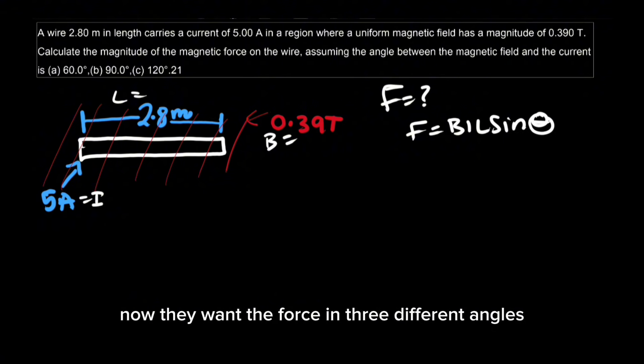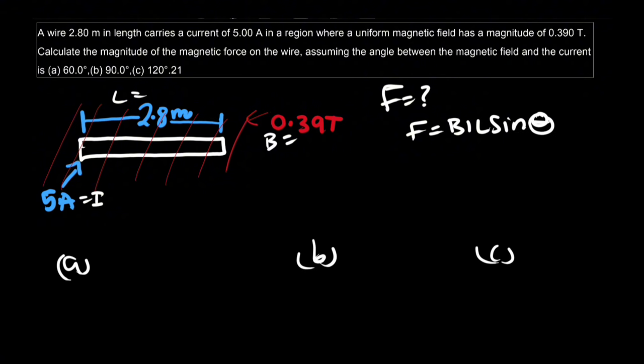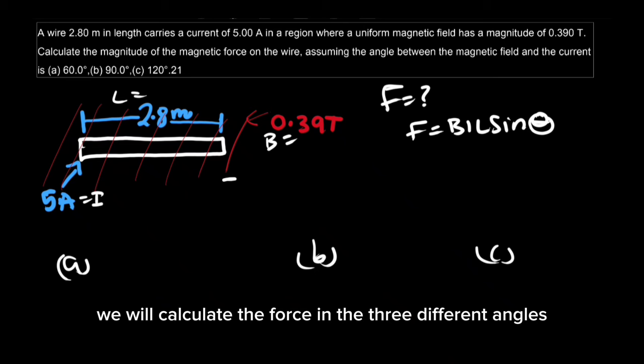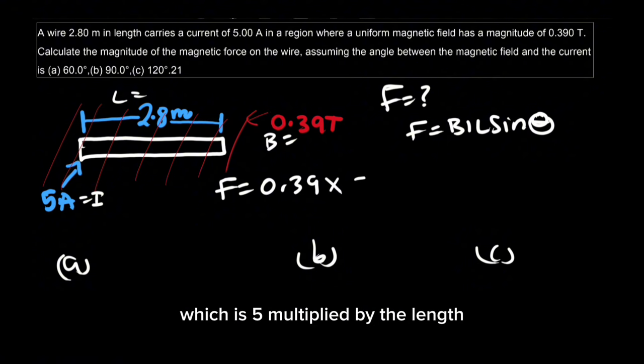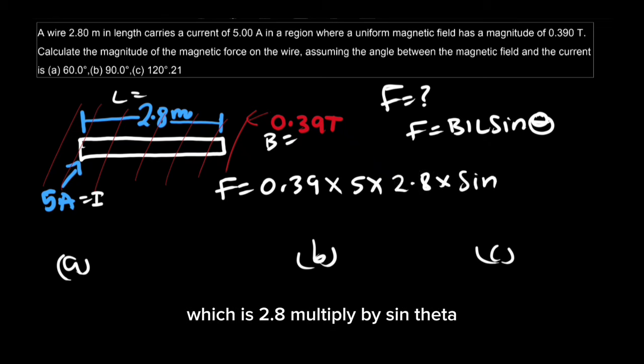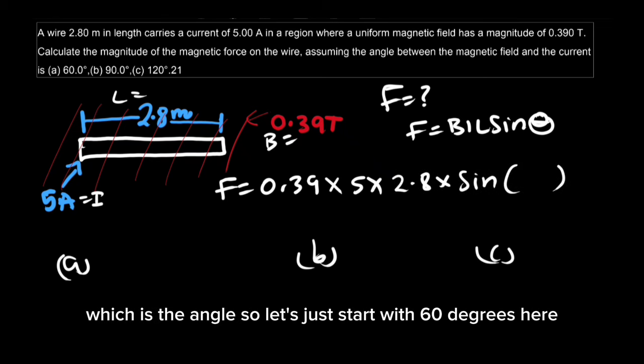Now they want the force in three different angles. We will calculate the force in the three different angles, so the magnetic field will be 0.39 multiplied by the current which is 5, multiplied by the length which is 2.8, multiplied by sine theta which is the angle.